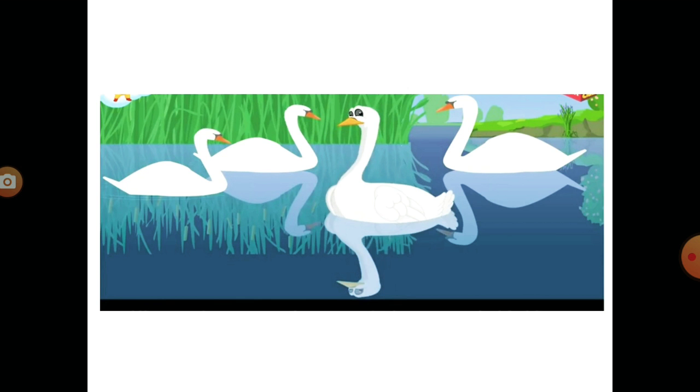The ugly duckling remembered the lovely birds. He was afraid to meet them, but he felt a strange longing to be with them. He swam towards the beautiful birds and bowed his head down to the surface of water. And what did he see in the clear stream below? His own image. No longer a dark, grey, ugly bird, but a beautiful and graceful swan.